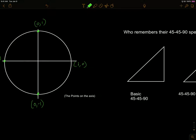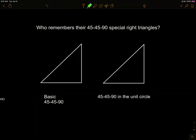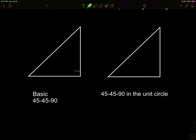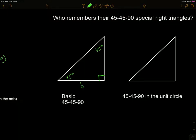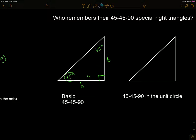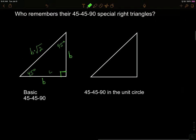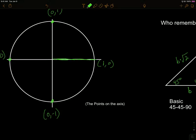Next, we use the unit circle together with our special right triangles. From geometry, a 45-45-90 triangle is isosceles — the two legs are equal, we'll call them b and b, and the hypotenuse is b times the square root of two. If I draw a 45-degree angle on the unit circle and drop a perpendicular, I create exactly that 45-45-90 right triangle.